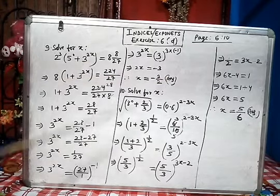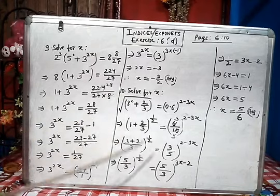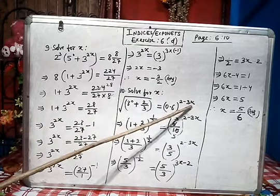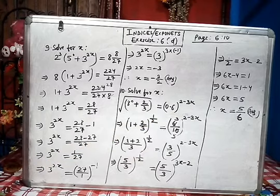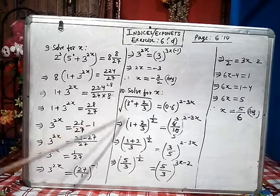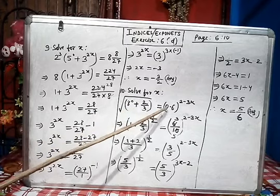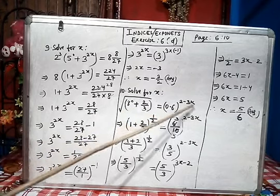Number 10, solve for x. Again here we are going to find the value of x. Again the x is on the power. Same target: make the base equal. √(8^0 + 2/3) = (0.6)^(2-3x).